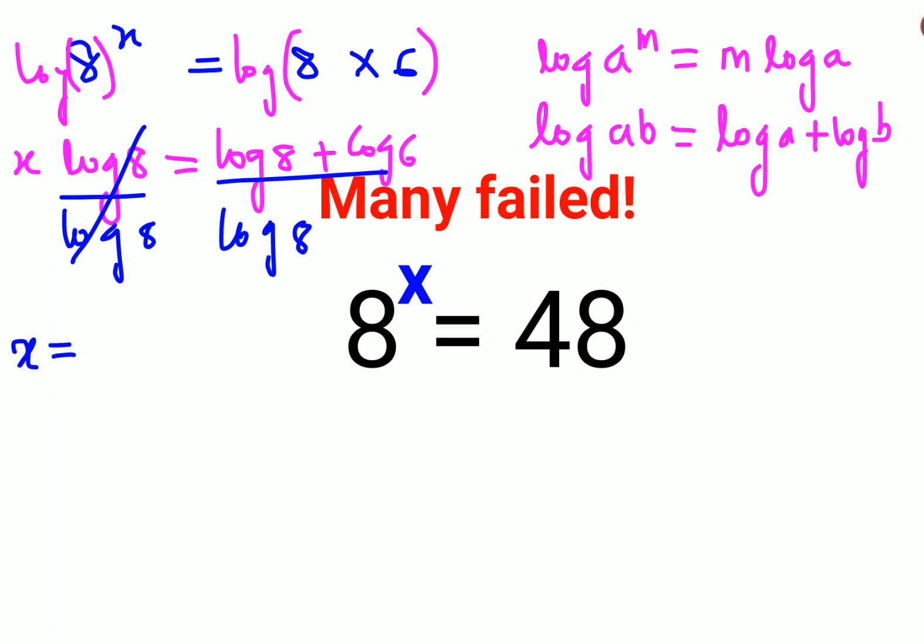So what we can do is we will split, so we have log 8 upon log 8 plus log 6 upon log 8. So this cancels and we are left with x is equal to 1 plus log 6 upon log 8.